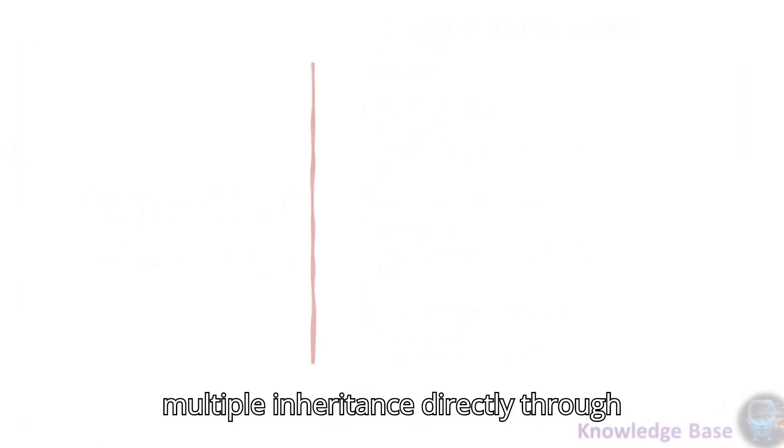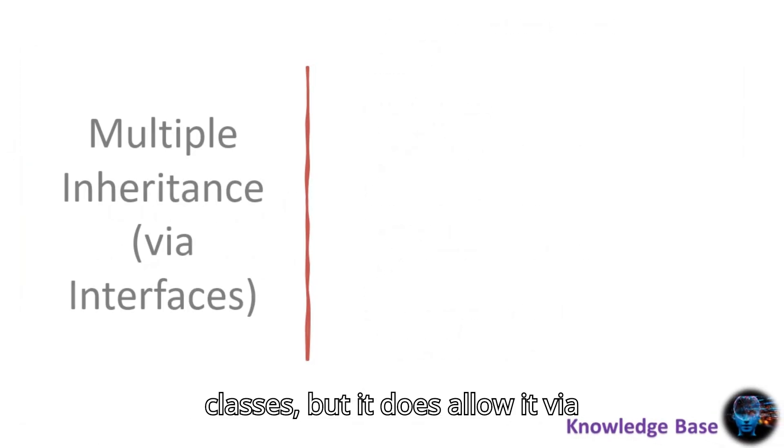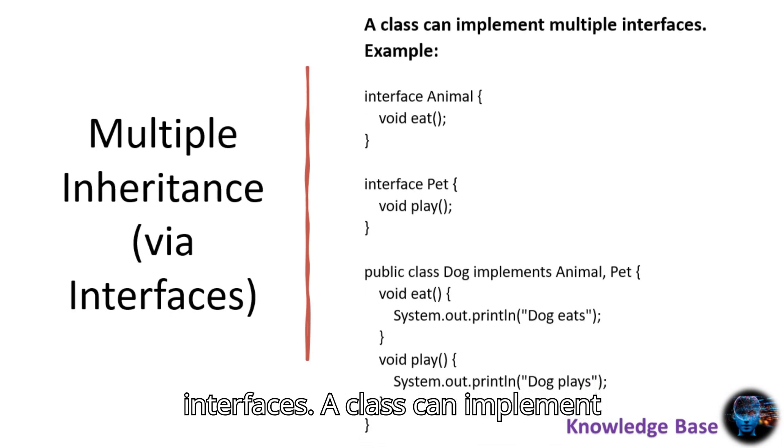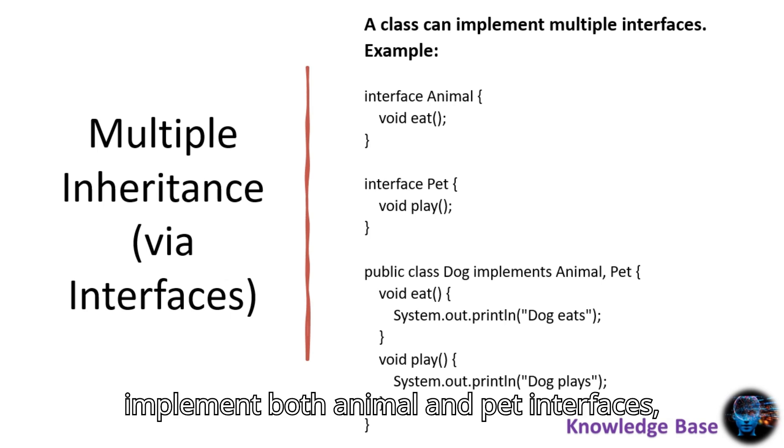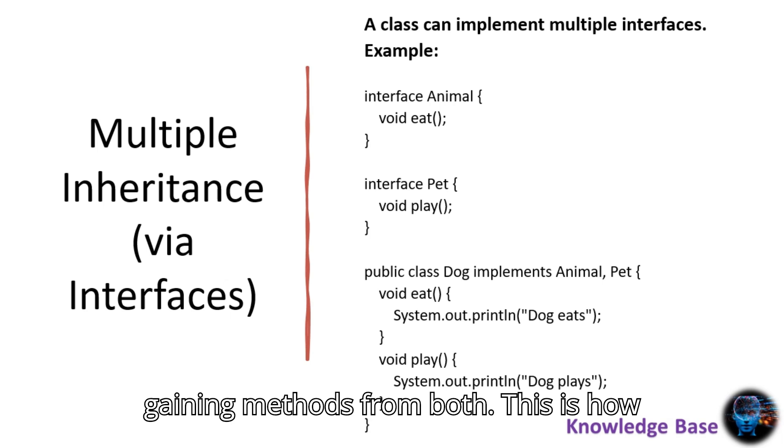Java doesn't support multiple inheritance directly through classes, but it does allow it via interfaces. A class can implement multiple interfaces, effectively inheriting behavior from multiple sources. For instance, a dog class can implement both animal and pet interfaces, gaining methods from both.